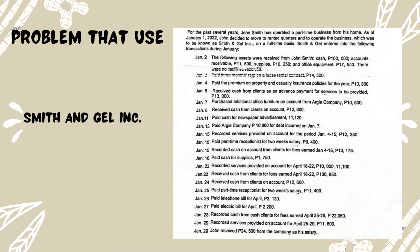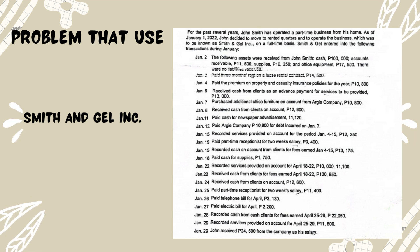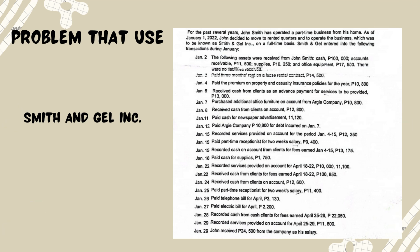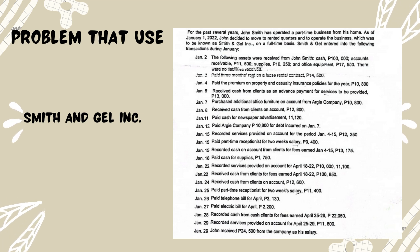Transaction dated January 24: received cash from clients on account, $12,600. Paid cash from clients on account for fees earned, $11,400. Transaction dated January 26: paid telephone bills for April, $3,130. Transaction dated January 27: paid electric bill for April, $2,200. Transaction dated January 28: recorded cash from clients for fees earned of April 25 to 29, $20,050.